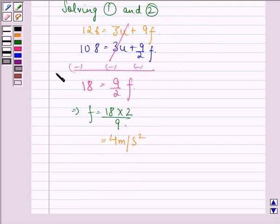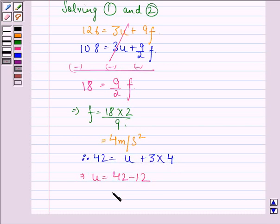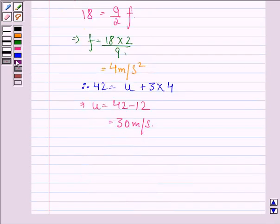Therefore 42 equals u plus 3 into 4. This implies u equals 42 minus 12, which equals 30 meters per second.